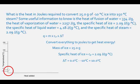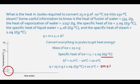The specific heat units are joules per gram degrees Celsius. To get the result in joules, multiply by the mass in grams and the change in temperature in degrees Celsius. The heat of this transition is calculated as 25.0 grams times 2.09 joules per gram degrees Celsius times 10 degrees Celsius, which equals 522.5 joules.